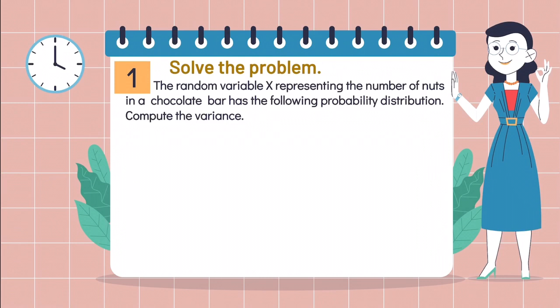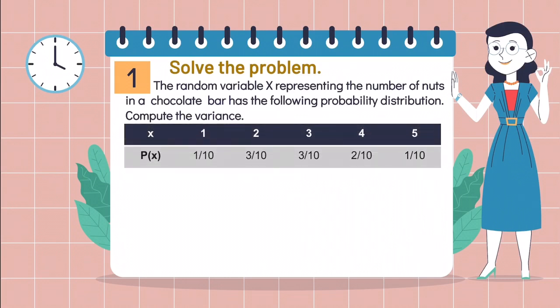Problem number 1: The random variable X, representing the number of nuts in a chocolate bar, has the following probability distribution. Compute the variance.